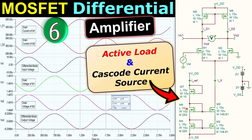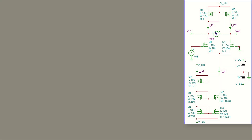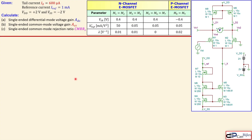The cascode current source is constructed only by transistors, and there is also an active load given by PMOS transistors. We will see that step by step in our calculations and also verify these in SPICE simulations. Let's look at our circuit.